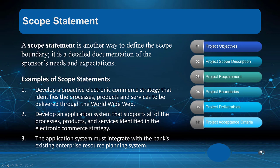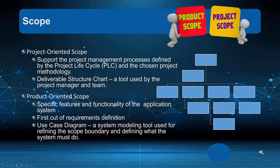The scope statement is another way to define the scope, done at the package level as well. It includes project objectives, scope description, project requirements, project boundaries, who will work on the project, project deliverables, and project acceptance criteria. Just because we create the product and it seems to work doesn't mean it's accepted — the customer must accept it. We tie that acceptance to the milestone: the milestone is when the prototype or project package is formally accepted.